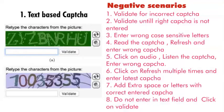Wherever a capital letter is shown, write small, or wherever a number is shown, write a letter. Read the CAPTCHA, refresh, and enter wrong CAPTCHA. Click on audio, listen to the CAPTCHA, and then enter wrong CAPTCHA. Click on refresh multiple times and enter the latest CAPTCHA — check whether the system accepts the latest one. Add extra space or letters with the correct CAPTCHA — add space in between or at the beginning or end.